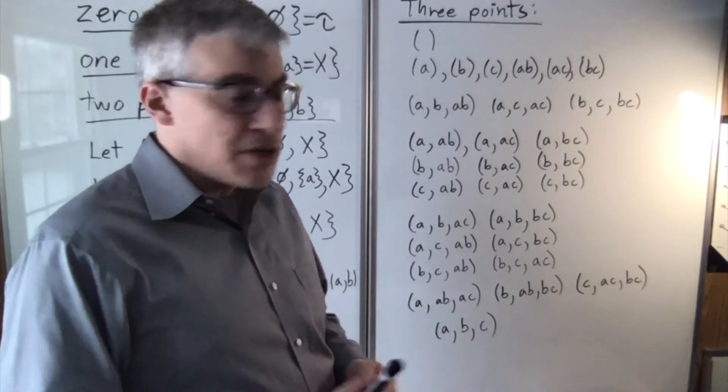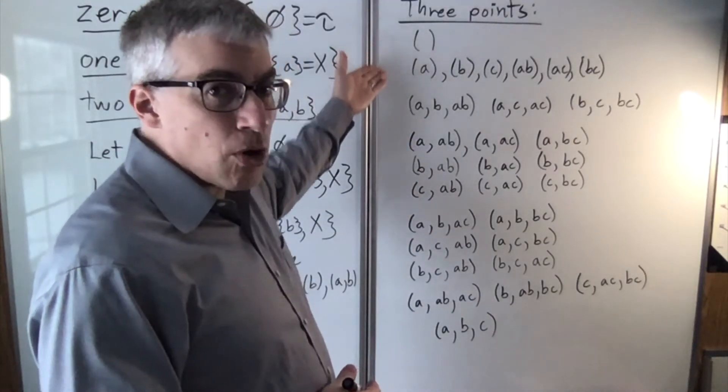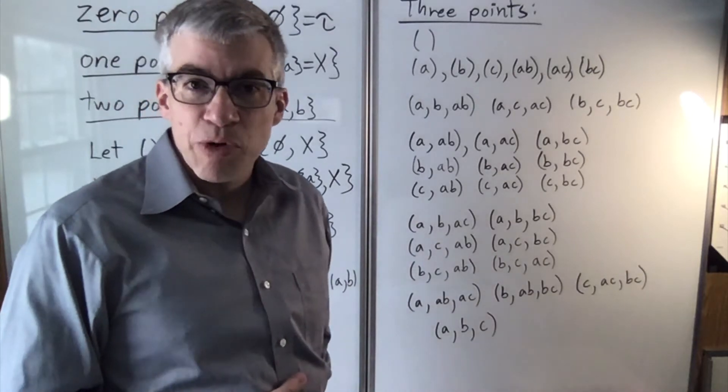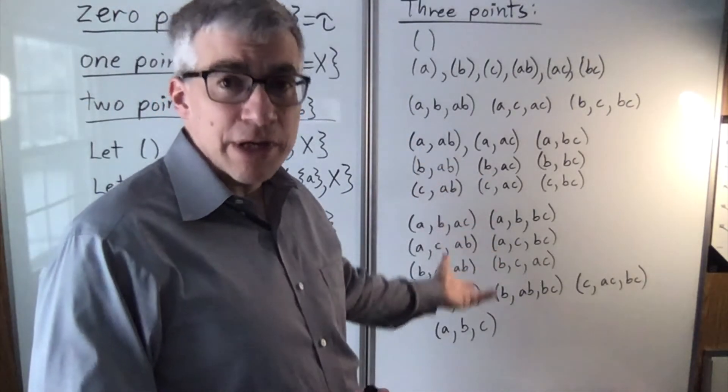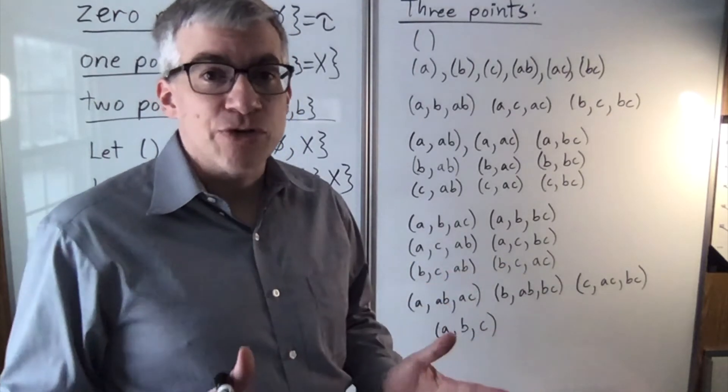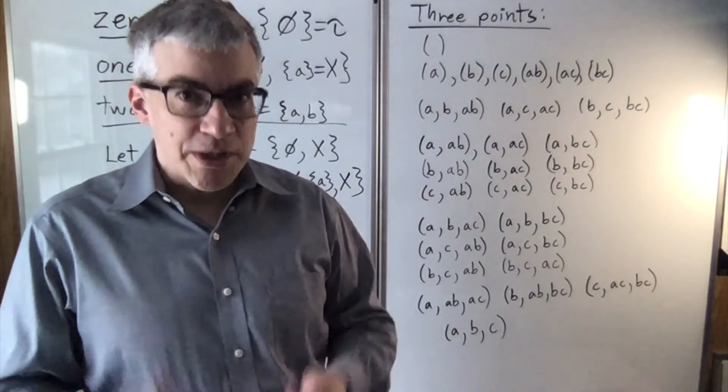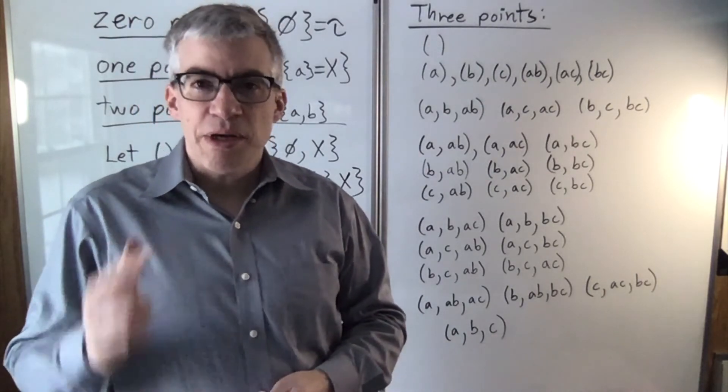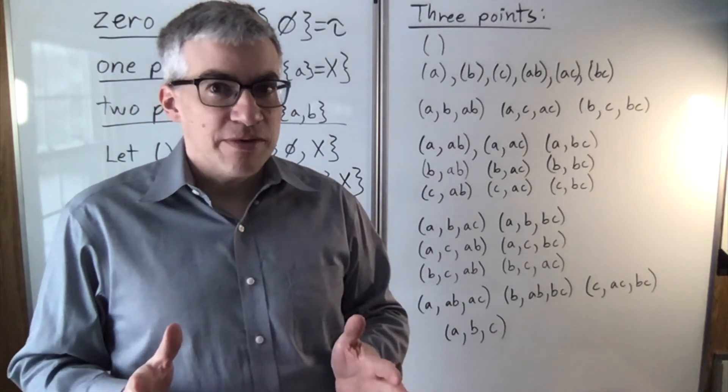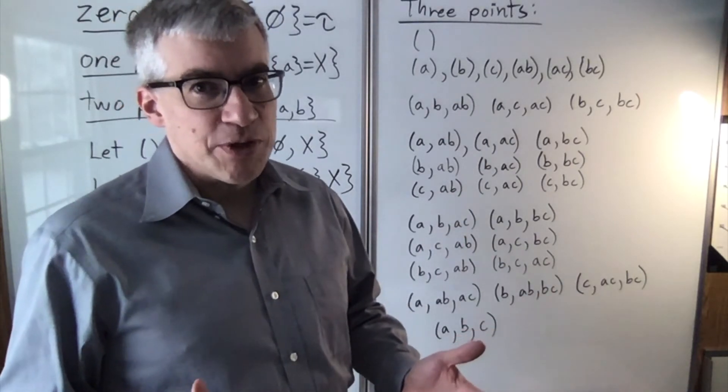With this condensed notation, I can now write out all 29 topologies on three points. I've grouped them in their similarities, and there are a whole lot of interesting ways to classify topological spaces. There's isomorphisms, there's separation axioms, and lots of other stuff, which unfortunately I don't have time to get into in two minutes.